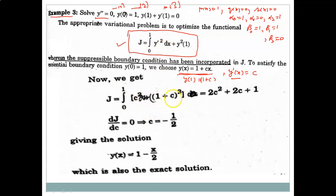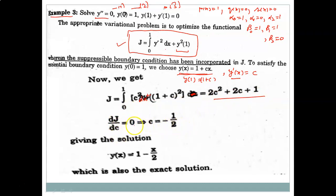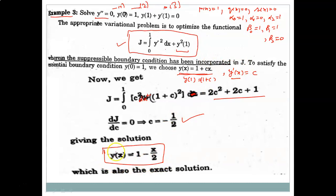Substituting y' = c and y(1) = 1 + c into the functional J: the integral part gives ∫₀¹ c² dx = c², and the boundary term gives (1 + c)². Setting dJ/dc = 0 gives c = -1/2. Substituting this back gives the approximate solution y(x) = 1 - x/2.